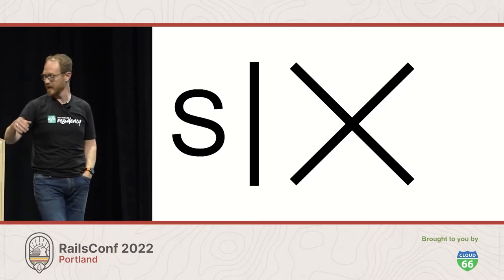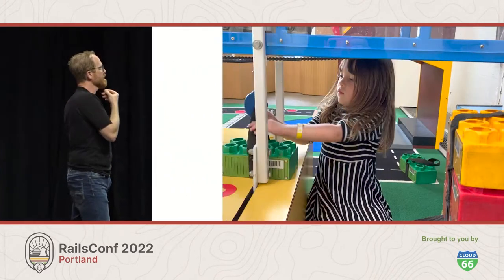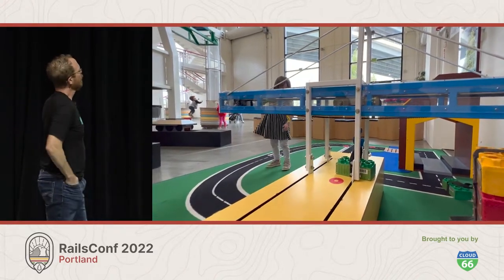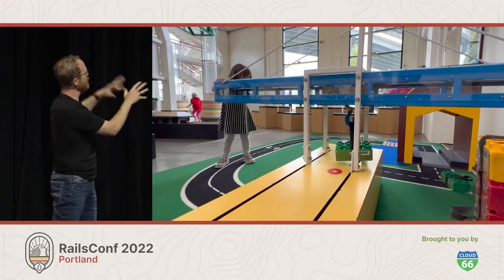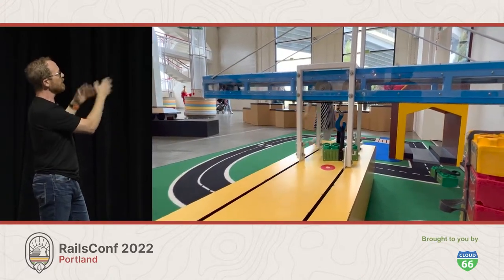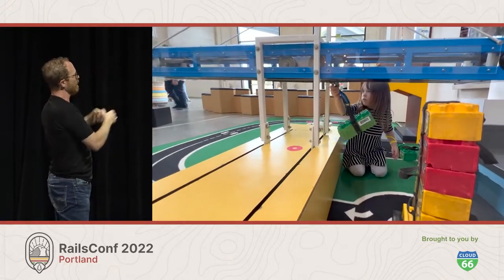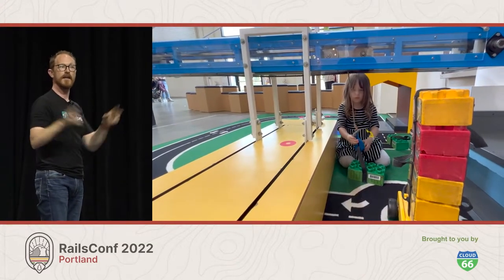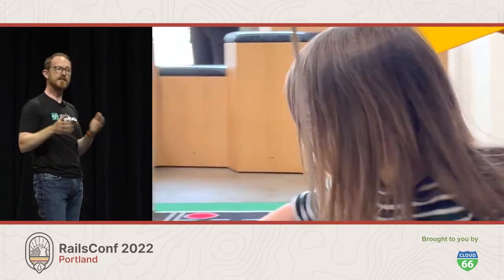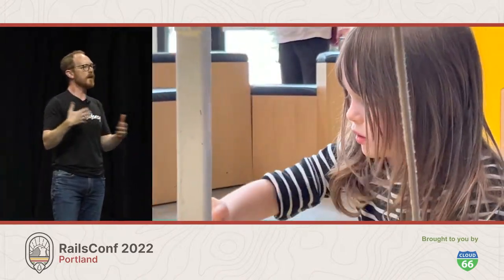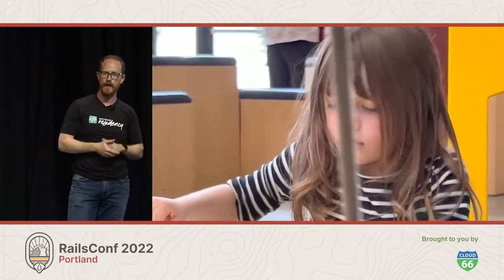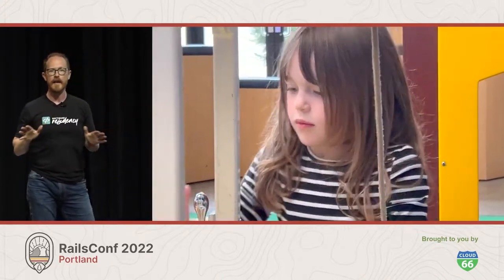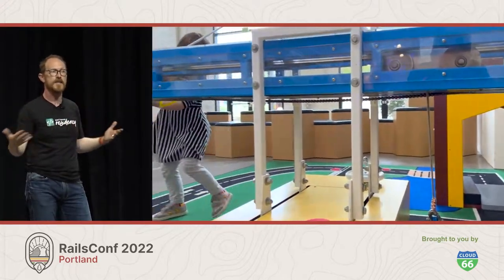I was at OMSI yesterday — the Oregon Museum of Science and Industry — with my oldest daughter Charlie. This is a kids' area where they're learning about how pulleys work. Look closely at what she's doing — she's not doing it correctly. And this is an important thing to remember about children: they're not precious about their past history around things. One of the first things we have to do in any area is break down our preconceptions about how something is meant to work.